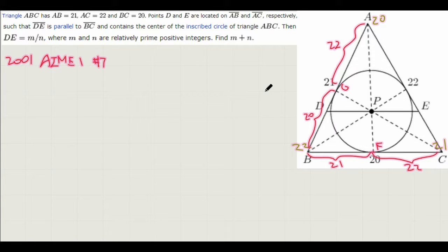So since triangle ADE and triangle ABC are similar, because their angles are all the same, we see that the ratio of DE to BC is simply AP to AF. So if we can find the ratio of AP to AF, then we can find the ratio of DE to BC, and then we can find the length of DE.